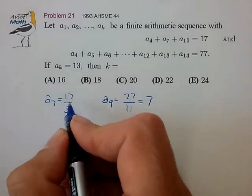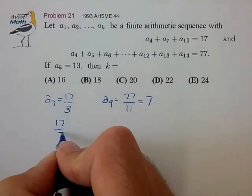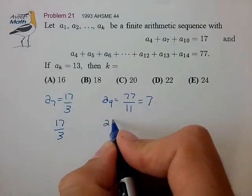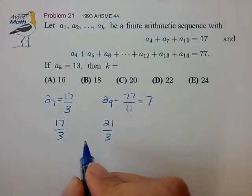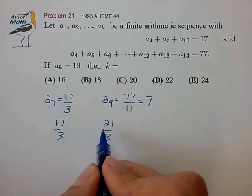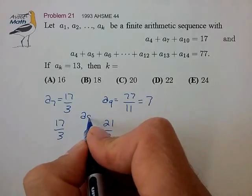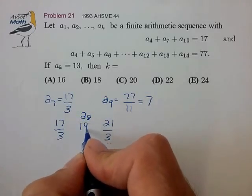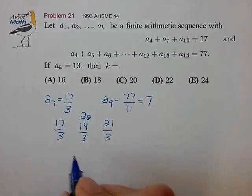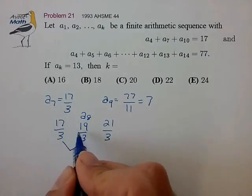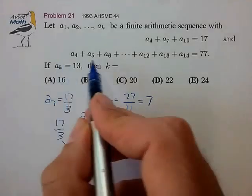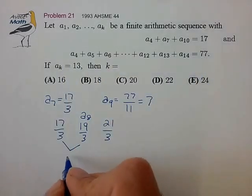So we have that A7 is equal to 17 over 3, A9 is equal to 21 over 3. We can find the center point between these two to find out that A8 is equal to 19 divided by 3 from which we then find that the difference between successive terms of our arithmetic sequence is 2 thirds.